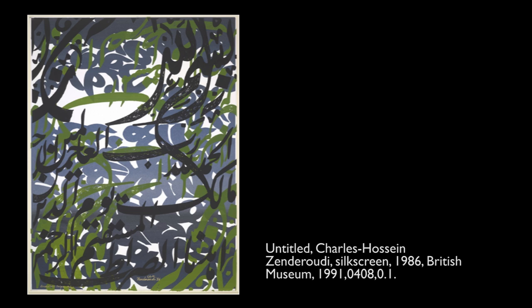One of the most important ways that modern contemporary artists express Islam is through calligraphy, and this happened in a very interesting way. This is an Iranian artist, Charles Hussein Zandarudi. He was one of the first modern Middle Eastern artists to use calligraphy, responding to a criticism that they were going and learning art in the West and forgetting their own identity. The way they reclaim their own identity is by looking at calligraphy and incorporating it into abstract compositions. He was part of a group called Saka Kane, attempting to integrate Islamic ideas, Shia culture from Iran, and find new modern and contemporary artistic ways of showing calligraphy.